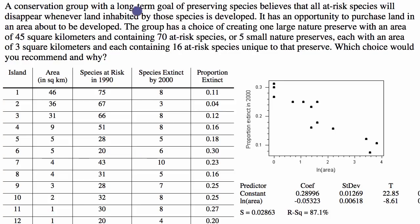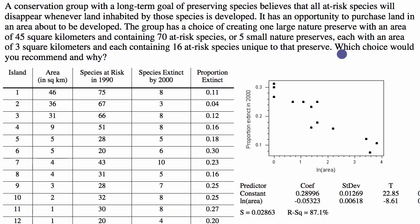A conservation group with a long-term goal of preserving species believes that all at-risk species will disappear when land inhabited by those species is developed. It has an opportunity to purchase land in an area about to be developed. The group can create one large nature preserve of 45 square kilometers containing 70 at-risk species, or five small nature preserves, each with an area of three square kilometers and each containing 16 at-risk species unique to that preserve. Which choice would you recommend and why?